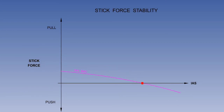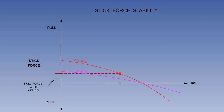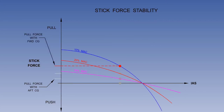We can now consider the effect of CG position on stick force. Moving the CG forward increases longitudinal static stability. With the CG at 30% MAC, a speed reduction requires a small pull force. With the CG at 20% MAC, the same speed reduction requires a larger pull force. With the CG at 10% MAC, an even larger pull force is required. Moving the CG aft decreases the stick forces required to displace the aircraft from trim speed.